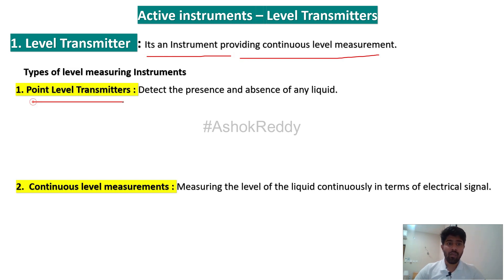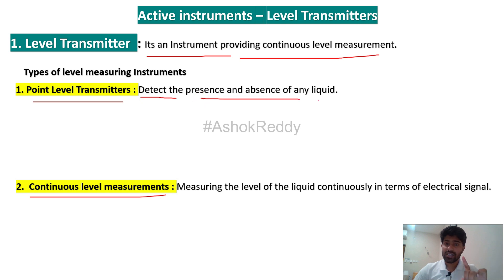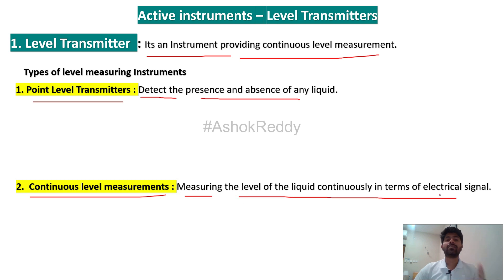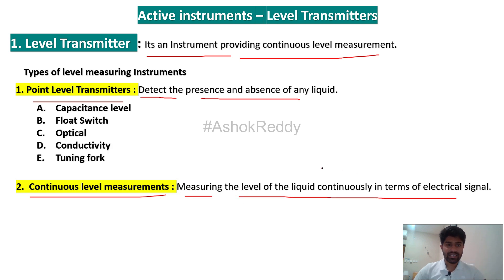One is the point level transmitter, and another one is the continuous level transmitter. In the point level transmitter, it will detect the presence and absence of the liquid. In the continuous level measurement, it will measure the level of the liquid continuously in terms of an electrical signal.